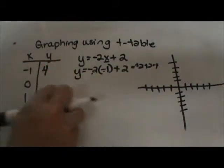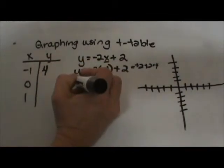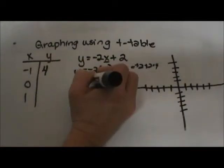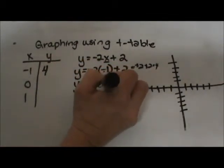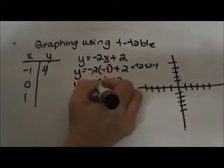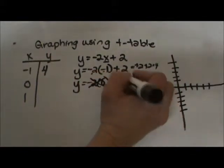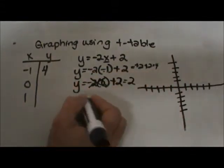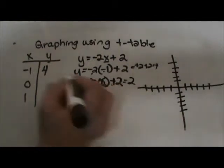Now let's plug in zero for x. Y equals negative 2 times zero plus 2. Zero doesn't mean anything, it's just zero, so it's gone. I just end up with zero plus 2, which is positive 2.